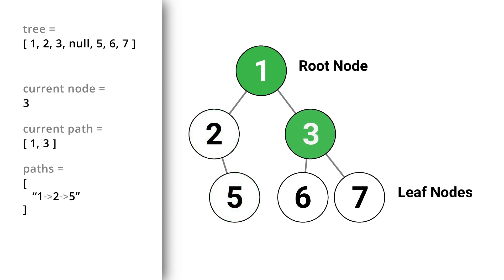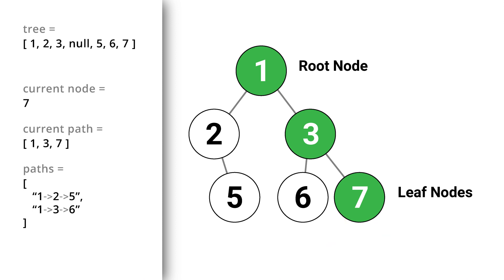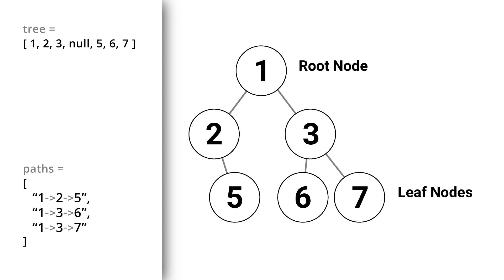Coming back to node 1, we can now traverse through the right node. From this node we continue traversal through the left node. At that node we have no left or right node, meaning we have reached a leaf node, so we stop and store the path to the result. Coming back to node 3, we traverse through the right node. At this node we also have no left or right node — we've reached a leaf node — so we stop and store the path. Finally, this is the list of all paths from the root node to the leaf nodes.